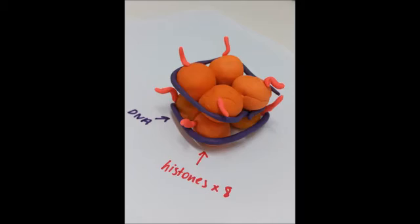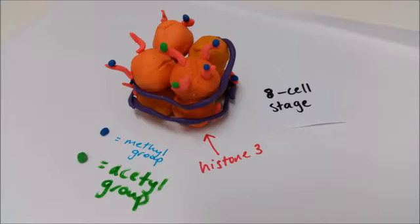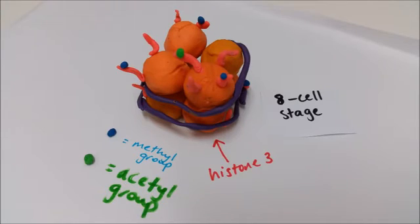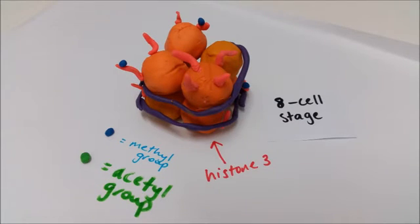Let's zoom in to an individual nucleosome to see what epigenetic modifications are caused by the Xist coating. At the 8 cell stage, methyl groups in blue are removed from the tails of histone 3 K4 during hypomethylation. At the same time, acetyl groups in green are also removed from the N-lysine residue of histone 3 through hypoacetylation. This represses gene activity by condensing the chromatin.